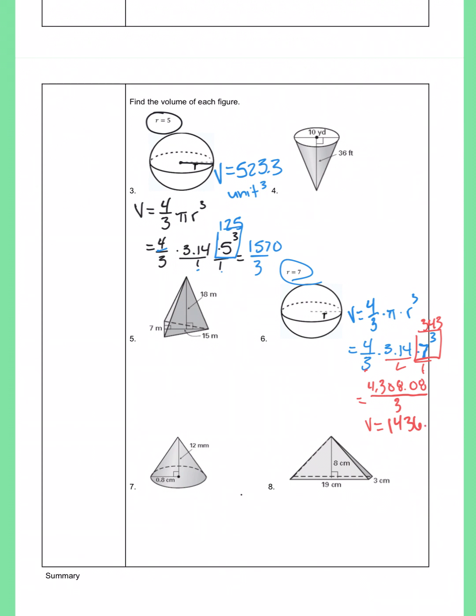I'm going to do that division now, so 4,308.08 divided by 3, and we're going to get a volume of 1,436.03 if we round properly to the hundredths place. This one again doesn't give us our units, we're just going to say units cubed or to the third power.